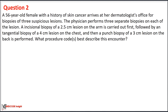Case 2: For the biopsy of three suspicious lesions, the physician performed three separate biopsies. An incisional biopsy of a 2.5 cm lesion on the arm is carried out first, followed by a tangential biopsy of a 4 cm lesion on the chest, and then a punch biopsy of a 3 cm lesion on the back is performed. What procedure codes best describe this encounter?